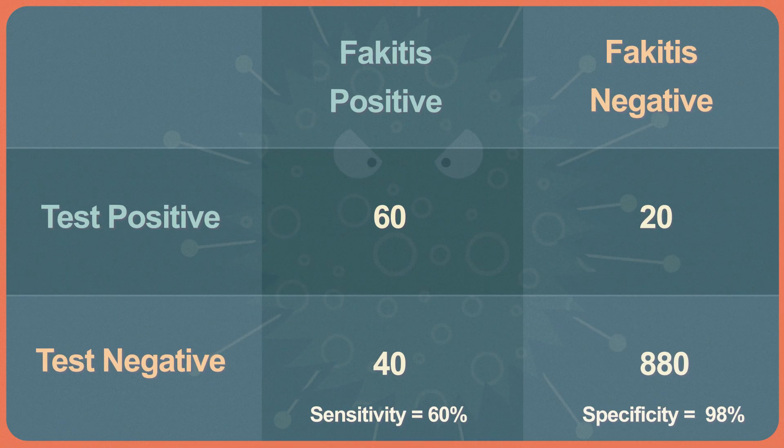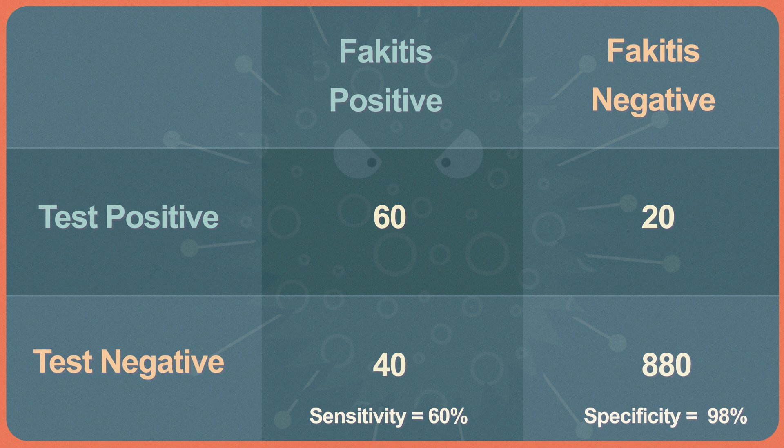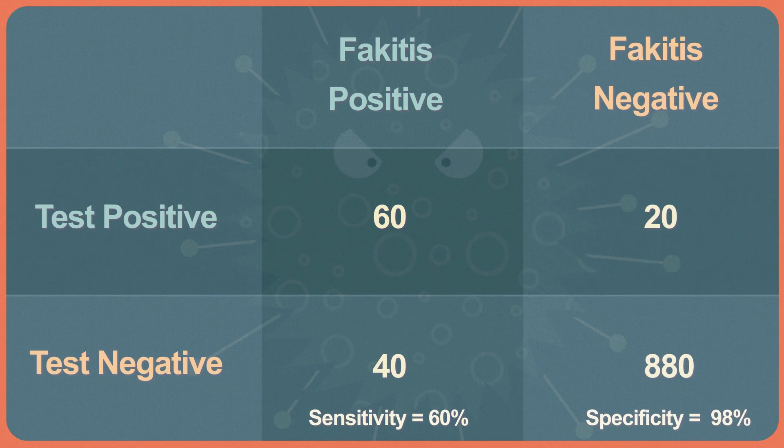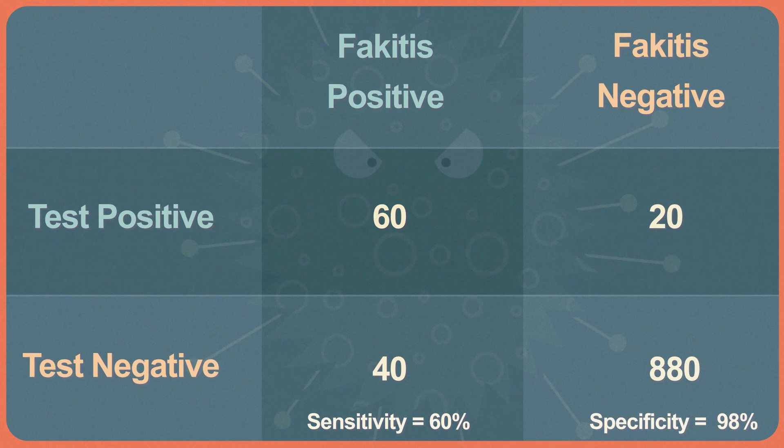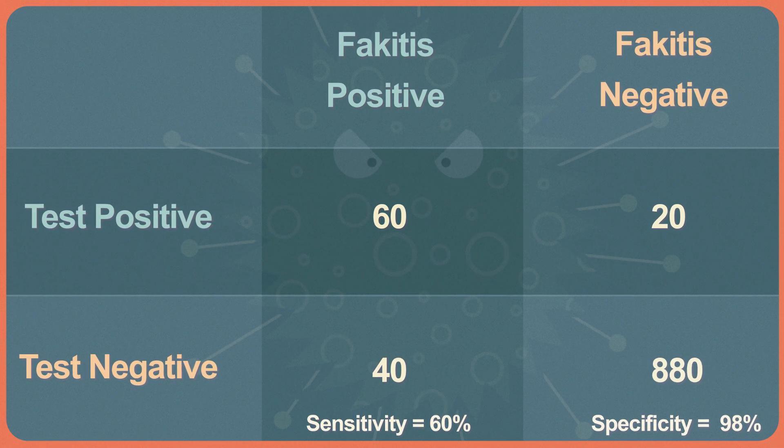Sometimes a positive diagnosis is a big deal and you really don't want to get a false one. Think about a pregnancy test — you're going to figure it out sooner or later anyway, and you really don't want to freak out tons of women. So if fake-itis was like that, we'd actually want to raise the threshold of the white blood cell count to lower the number of false positives — maybe set it at 18 instead of 15. Now our sensitivity is 60 over 100, or 60%, but our specificity is 880 over 900, or 98%. As we made the test more specific, or more able to prove a positive result is real, we made it less sensitive, or less able to detect disease if it's there. Tests are rarely very sensitive and very specific.